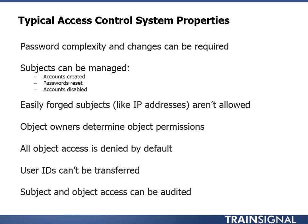Most access control systems automatically grant access to the owner who creates an object and allow that owner to control the permissions assigned to it. So if I'm on a network and I make a new file, it grants me complete control and gives me the ability to say who can and can't access it. Object owners determining object permissions is a common trait in modern access control systems. And in most modern access control systems, they deny access to everybody by default. In early versions of Windows you could make a new file and it would give everybody full control by default — nowadays secure by default is the name of the game.